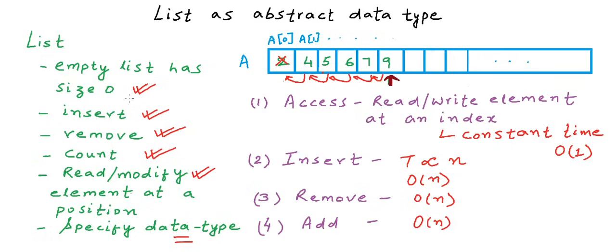A lot of the array is unused and wasted, so the use of array as a dynamic list is not efficient in terms of memory. This leads us to think: can we have a data structure that gives us a dynamic list and uses memory more efficiently? We have one such data structure — the linked list — and we will study linked lists in the next lesson. That's it for this lesson, thanks for watching.